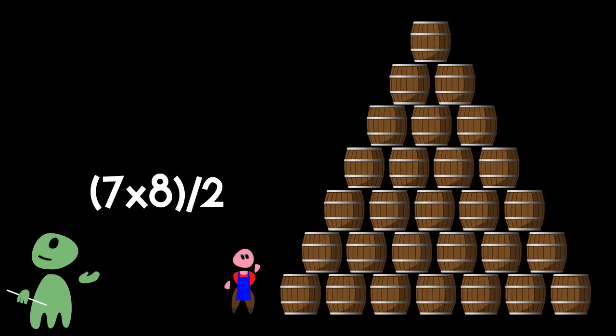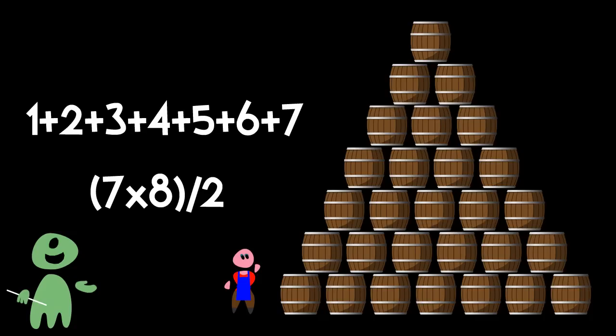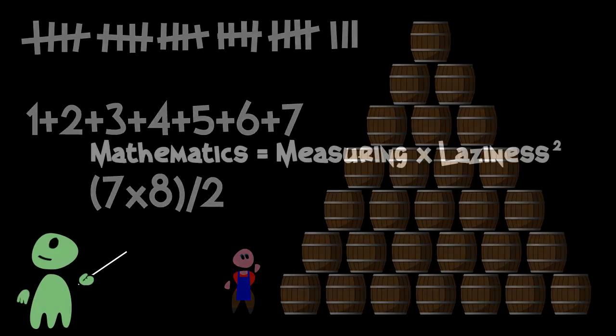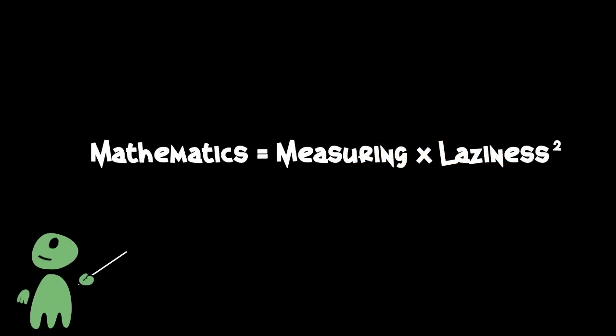Basically, mathematics is a way of avoiding calculating, and calculating is a way of avoiding measuring and counting. That's why we could define mathematics equals measuring times laziness squared.